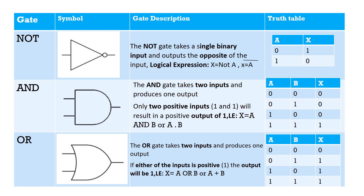AND gate — this is the representation of AND gate. AND gate will take two inputs and produce one output. It will be true if both inputs are positive. It means if I have two inputs both equal to 1, then my result will be 1. Usually, we represent the logical expression as A AND B, and we can also represent it as A.B.